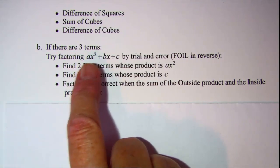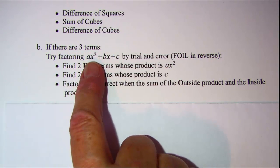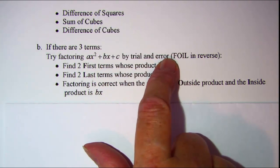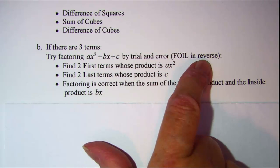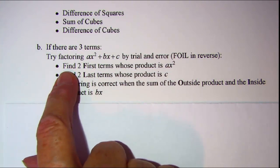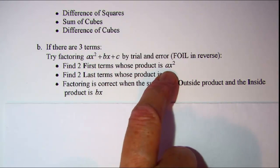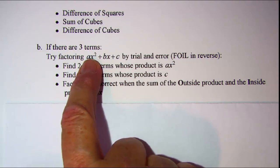If there are three terms, try factoring ax squared plus bx plus c by trial and error, in other words FOIL in reverse. You'll want to find two first terms whose product is ax squared, which is the first term of the trinomial.